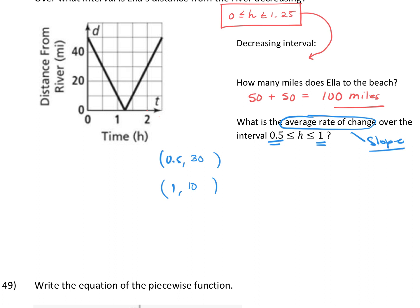With our two ordered pairs, average rate of change means we find the slope using the slope formula: y₂ minus y₁ over x₂ minus x₁. So that's 10 minus 30 over 1 minus 0.5, which gives us negative 20 over 0.5. Negative 20 divided by 0.5 equals negative 40. Our average rate of change is negative 40.